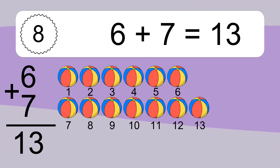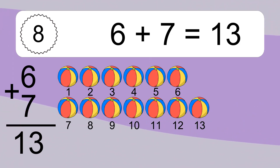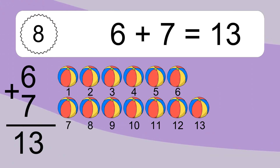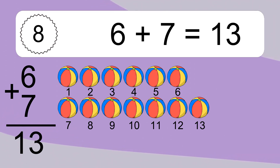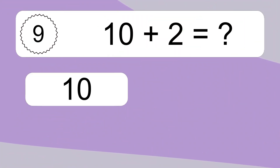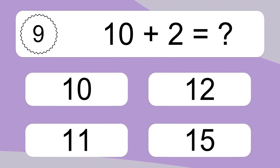6 plus 7 equals what? Let's count it: 1, 2, 3, 4, 5, 6, 7, 8, 9, 10, 11, 12, 13.